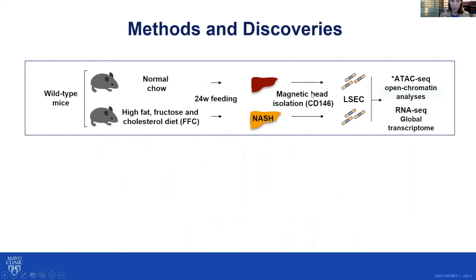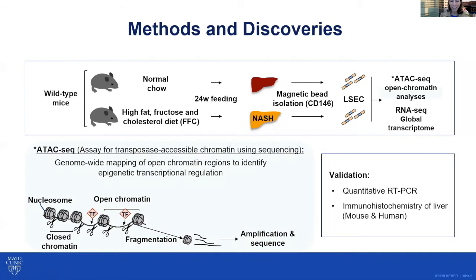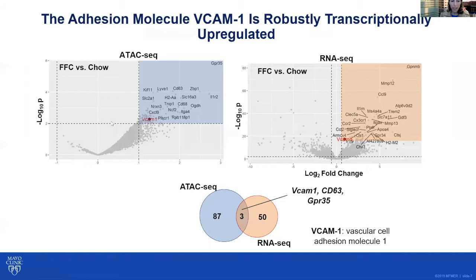For an unbiased screening of the upregulated genes in LSECs during NASH, we isolated LSECs from chow-fed or FFC-fed mice and performed ATAC-seq and RNA-seq. ATAC-seq allows genome-wide mapping of open chromatin regions to identify epigenetic transcriptional regulation. We analyzed open chromatin regions in the whole genome promoters. As shown in the volcano plot on the left, we identified 87 open chromatin regions and their corresponding neighboring genes that are differentially abundant in NASH mice.